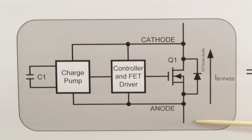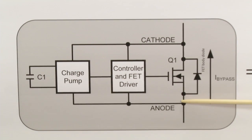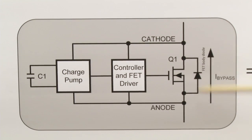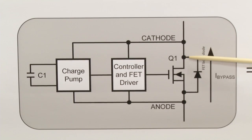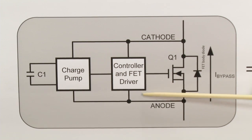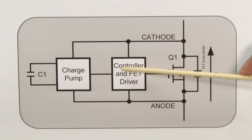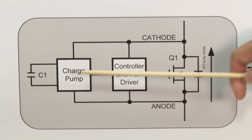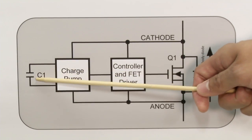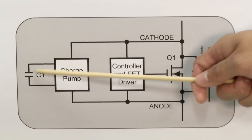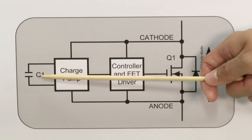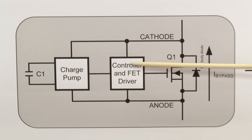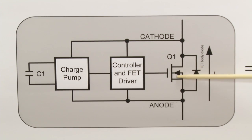When the panels are shaded, at first the current will flow through the body diode of the MOSFET. The voltage drop across the body diode will create energy to power up our controller and initiate the charge pump. The charge pump will then charge energy into the capacitor, and once the capacitor energy level has been reached, the controller will turn on the MOSFET.